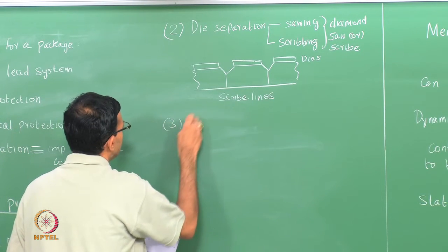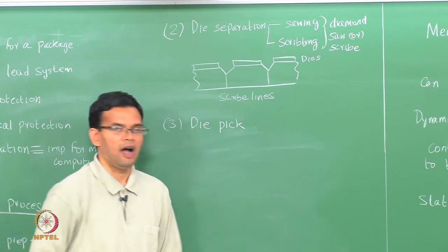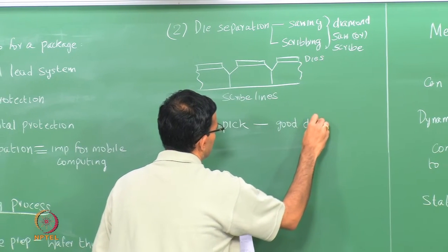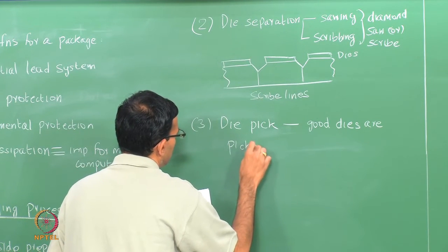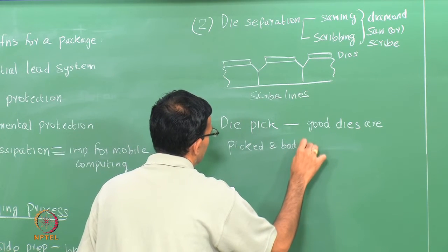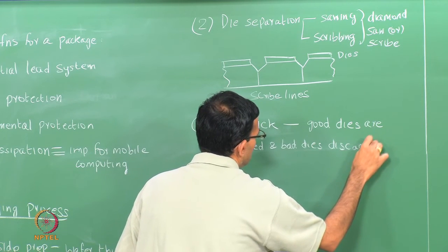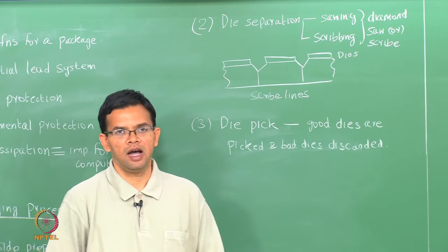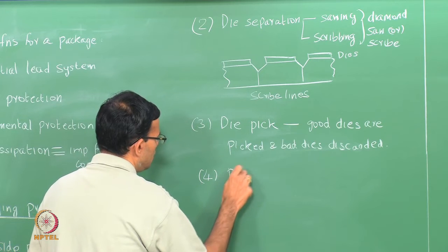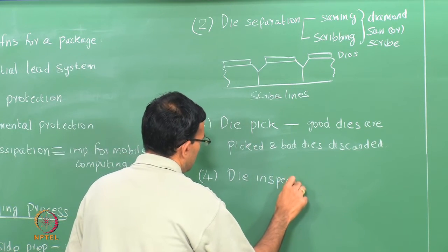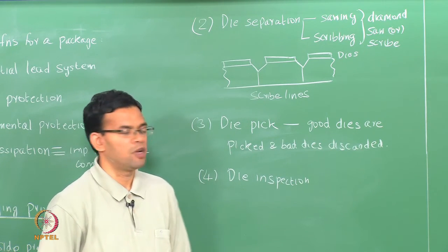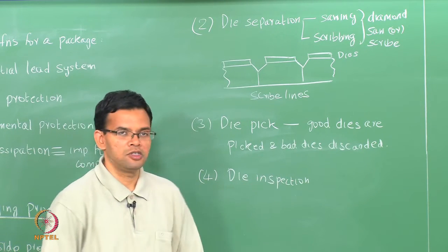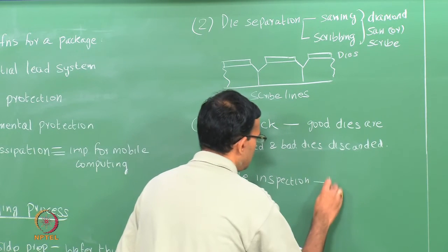After die separation, the good dies are essentially picked and the bad dies are discarded. This goes into the yield of the process — the more good dies we have, the higher is the yield. Then we have die inspection, which is more of a physical inspection to check for any cracks or defects, because during the packaging process there will be further stresses on the dies and we want to make sure the dies do not fail. These dies have passed the pick process — they have passed electrical inspection — but this is essentially a physical inspection.